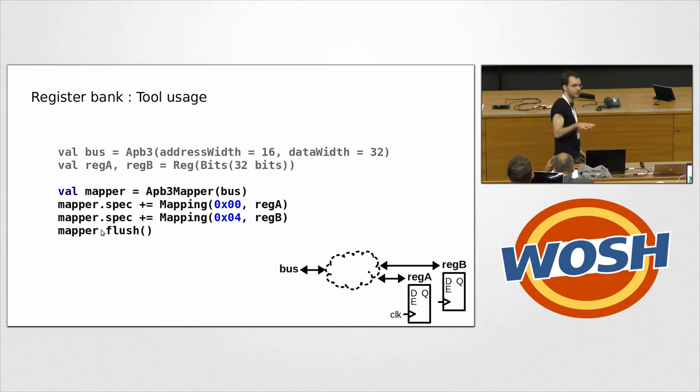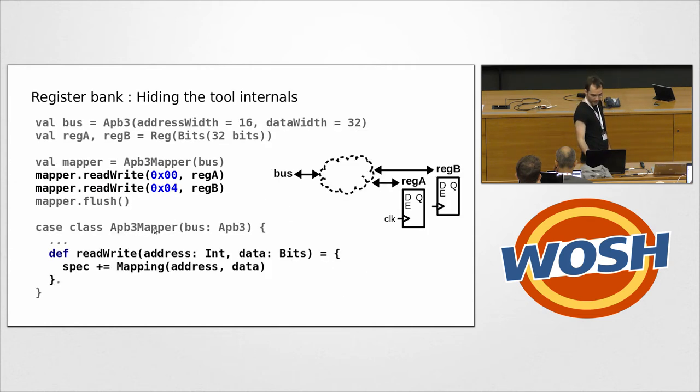So... And then, if you want to use that tool, there is a user code. Like, imagine you want to redesign this peripheral, this memory mapping, this register bank. So, as before, you will define your APB3 bus, reg A, reg B, and then you will create an instance of the tool that we just defined before to do memory mapping. You will add to the specification of this tool that there is mapping at address zero, mapping at address four, and this register, this register, and you will call the function flush. So, this is one of the first step of, I would say, like design automation. And the good thing is, we are still fully integrated into the SpinalHDL flow.